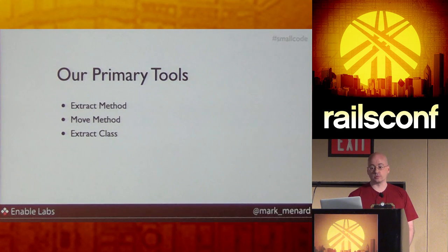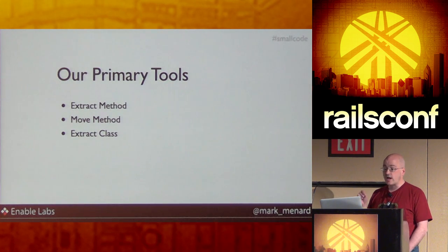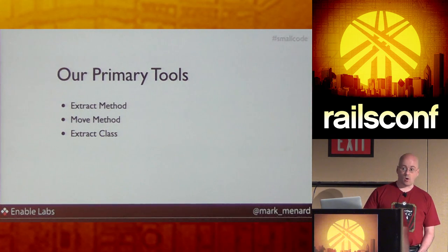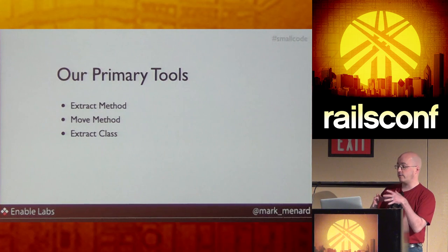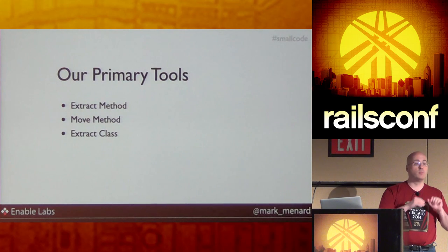Our primary tools are extract method and extract class. Longer methods are harder to understand than short methods, and most of the time we can shorten a method simply by using the extract method refactoring. Once we have a set of methods that are coherent around a concept, we can look to extract those into a separate class and move the methods to that new class.